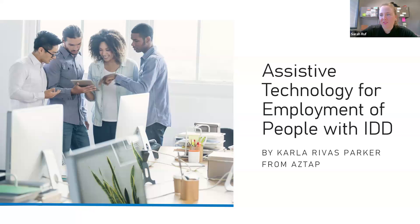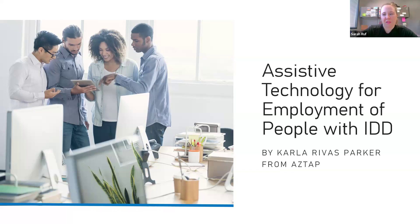Carla also earned a second Master's degree in Education and Vision Studies from the University of Massachusetts. She is a certified rehabilitation counselor, a certified assistive technology instructional specialist, a certified vision rehabilitation therapist, and a certified assistive technology professional. After earning her Master's degree in 2000, she went to work for the Arizona Rehabilitation Services Administration for the next 20 years, holding various positions including counselor for people with blindness, statewide blindness coordinator, and manager for the Older Individuals Who Are Blind program.